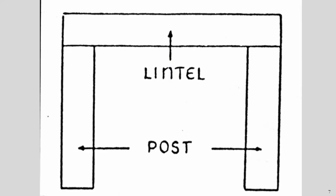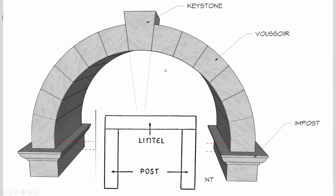Before we understand the significance of Roman concrete, let's look at an early architectural form: the post-and-lintel system. It's a system still used today, great and efficient with strong materials like steel. But in the ancient world, the most common material was stone — think of the Greek temples made with marble. The problem with a post-and-lintel structure is that your weakest point is right in the middle. You can only add so much weight before the center of the lintel will eventually give in and break.